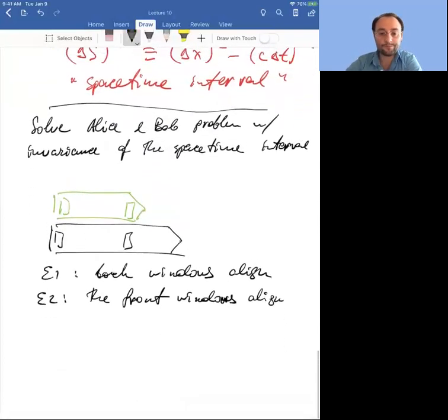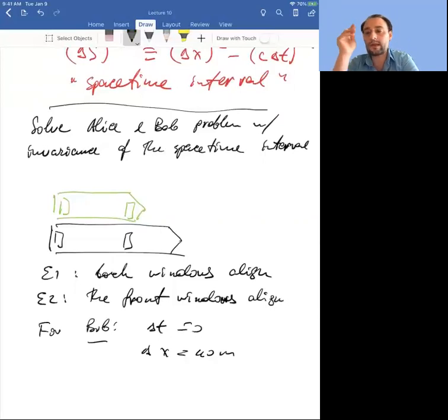Let's figure out what the delta x's and delta x primes are. For Bob, delta t between the two events equals 0, and delta x equals 40 meters. We used length contraction to find 40 meters, but let's say we found it. Now I want to know the time.